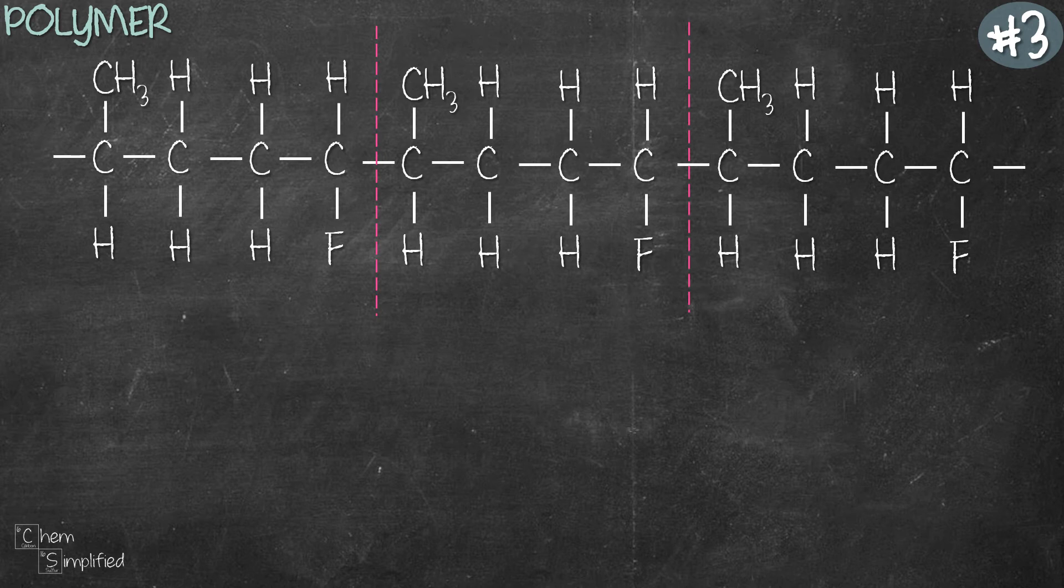Question is, is this a copolymer with two different monomers or is this a polymer made from monomer with two CC double bonds? Now if it was made from monomer with two double bonds, then it should have a double bond in the repeating pattern like the one in our previous example. Well since this doesn't have it, so it's safe to assume that this is a copolymer.